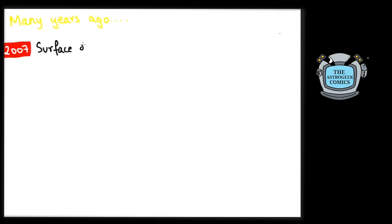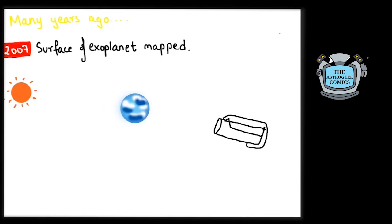The infrared light coming directly from the exoplanet was detected by the Spitzer Space Telescope. In another amazing first, in the year 2007, the first rough map of an exoplanet's surface was made.